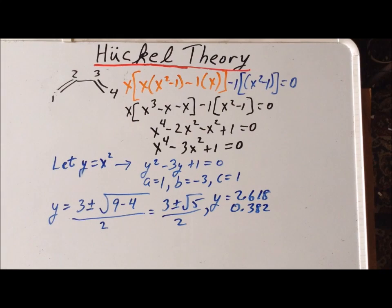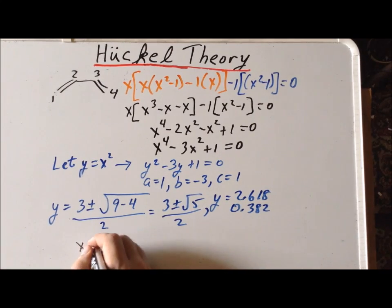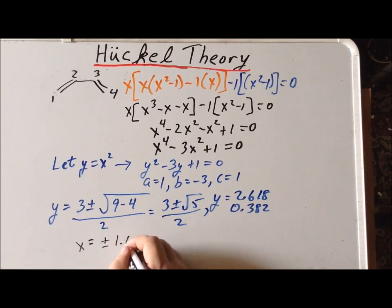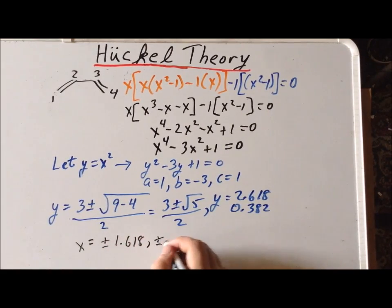Now, that gives us two roots because we are solving a quadratic equation here. It's quadratic in y, but ultimately, we want to solve for x. To do that, we need to substitute our values of y into this particular equation. And to solve for x, we simply take the square root of each side. So, we take the positive and negative square roots of 2.618 and 0.382, and that gives us the following result, that the roots x are equal to plus or minus 1.618 and plus or minus 0.618.